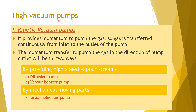After roughing pumps, the next category is high vacuum pumps, including kinetic vacuum pumps and ion pumps. In kinetic vacuum pumps, momentum transfer is the key principle — the gas is transferred continuously from inlet to outlet. This momentum transfer can be achieved in two ways: by providing a high-speed vapor stream, or by providing mechanical moving parts. The diffusion pump and oil vapor booster pump use high-speed vapor stream, while the turbomolecular pump uses mechanical moving parts.